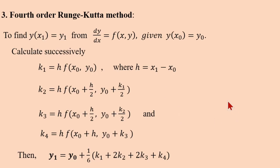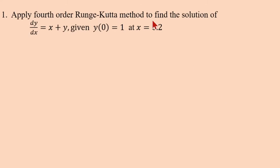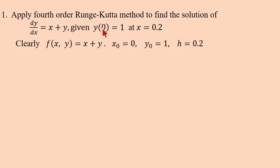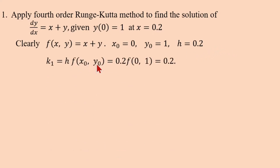Example: Apply the fourth-order Runge-Kutta method to find the solution of y' = x + y, given y(0) = 1, at x = 0.2. Here x₀ = 0, x₁ = 0.2, so h = 0.2. f(x,y) = x + y, x₀ = 0, y₀ = 1. k1 = h·f(x₀, y₀) = 0.2·(0 + 1) = 0.2.